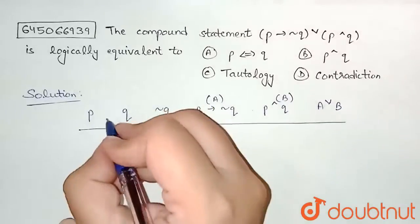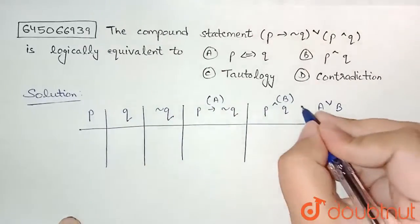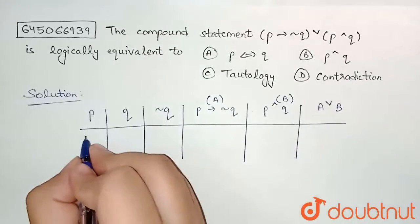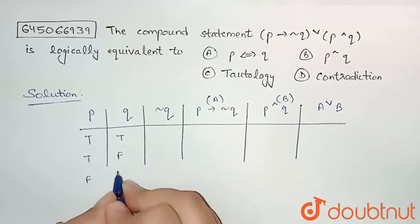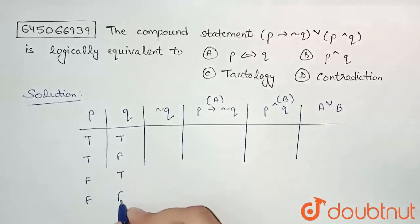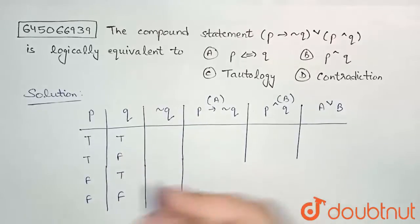These are the columns I am making. The values can be either true true, true false, false true, or both can be false. Now we will calculate negation q. Negation q will be opposite of this: this is true so false, true, false, and true.